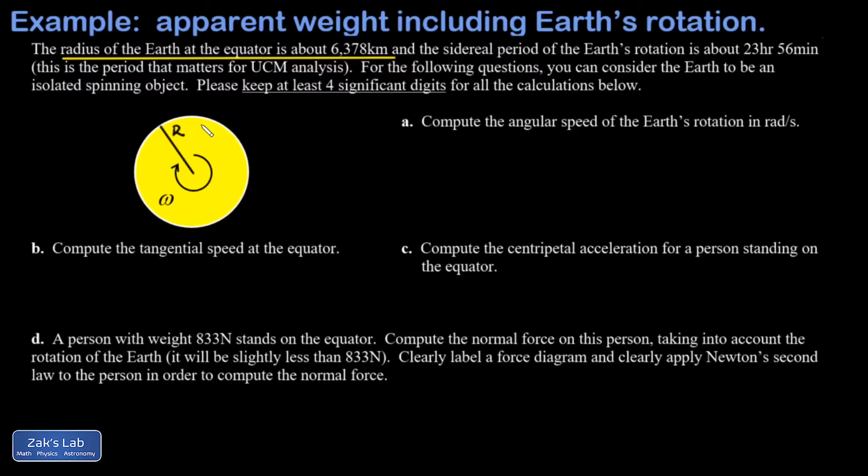That word sidereal just means this is the rotation of the Earth with respect to a distant reference frame. The length of our day is actually measured with how long it takes to get the sun back to the same position in the sky, and that's a little bit longer than one sidereal rotation because we're revolving around the sun at the same time. This is just a minor correction to the problem. We're also asked to keep at least four significant digits for all the calculations because we're looking for a pretty minor effect.